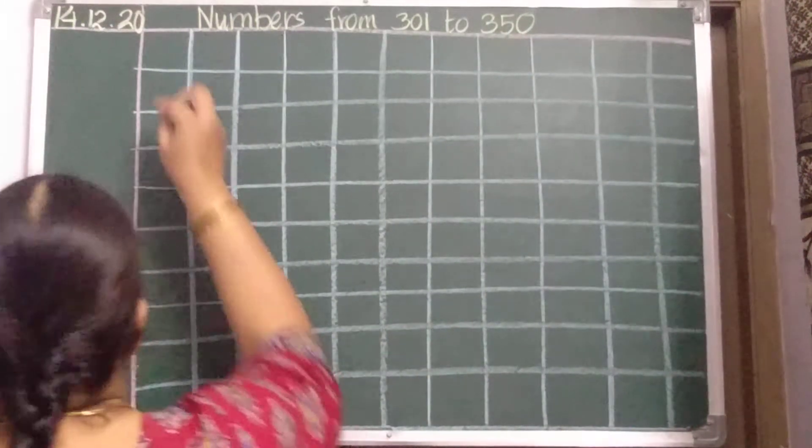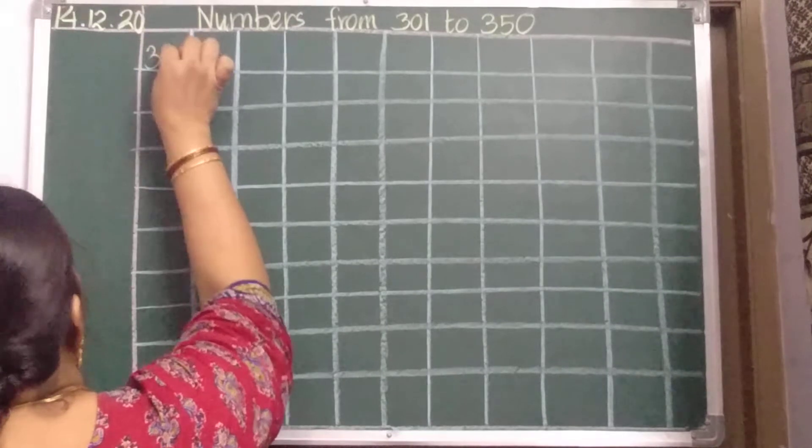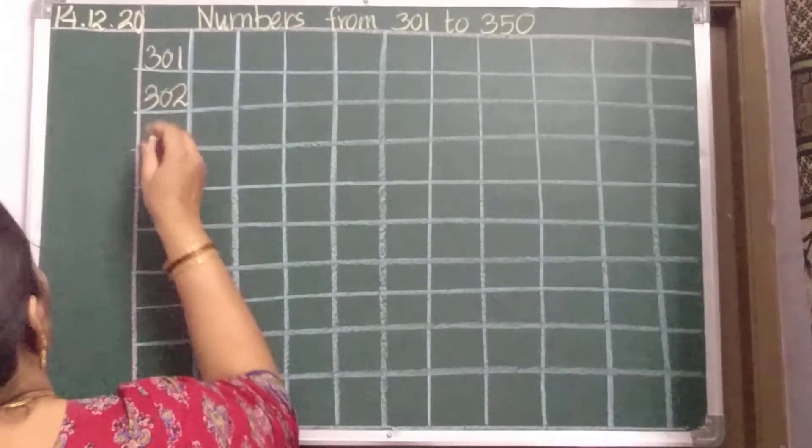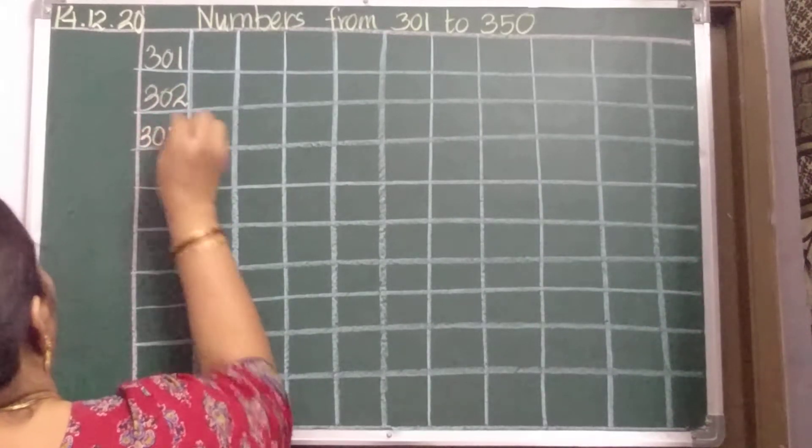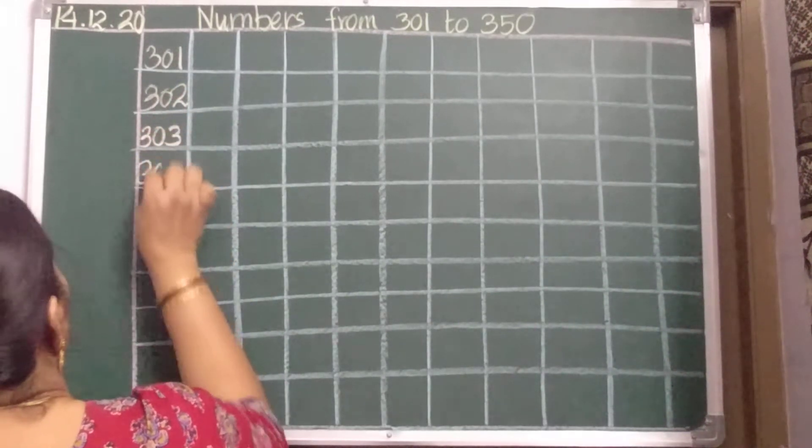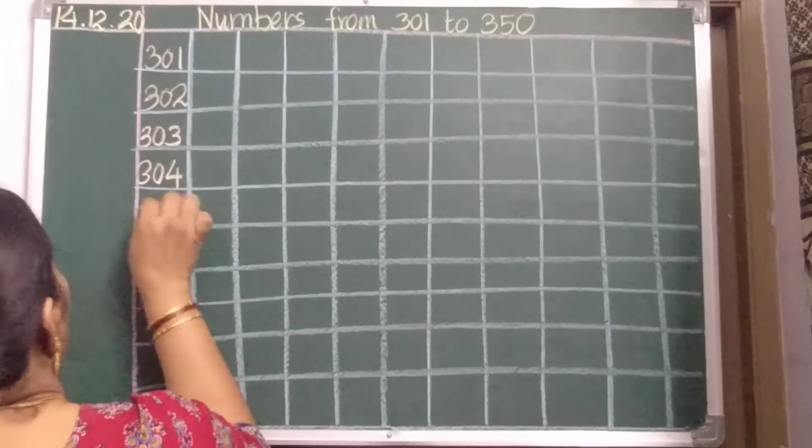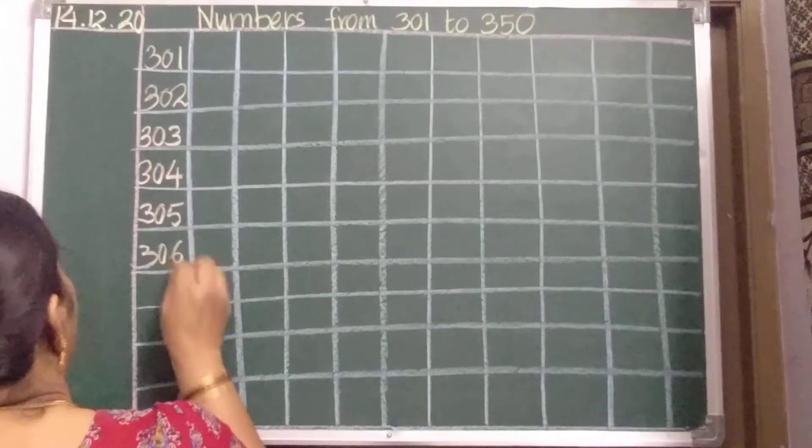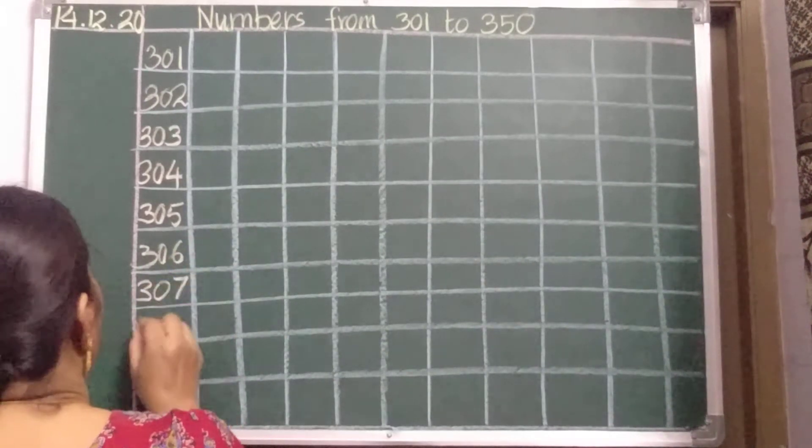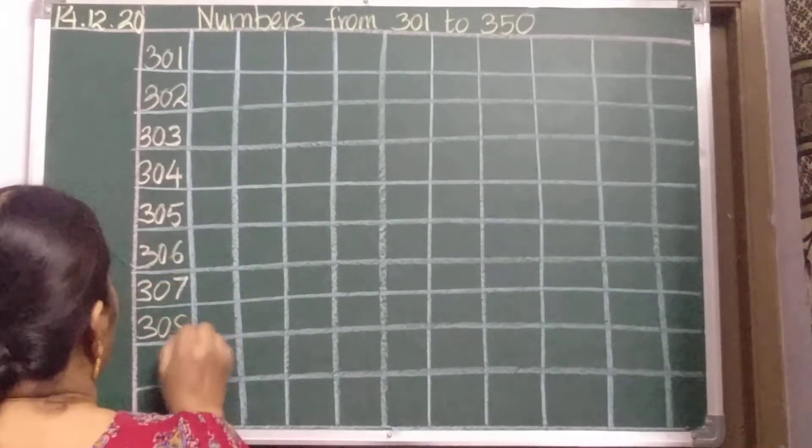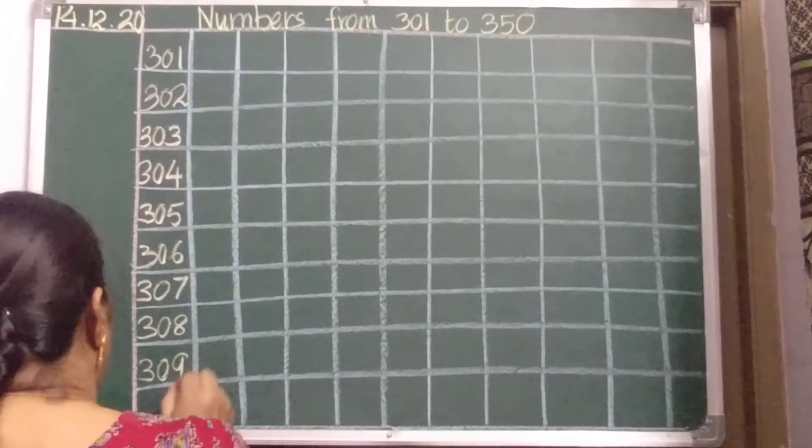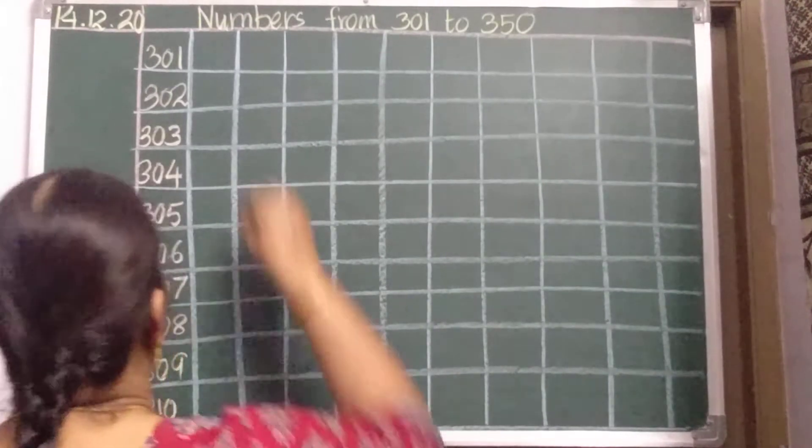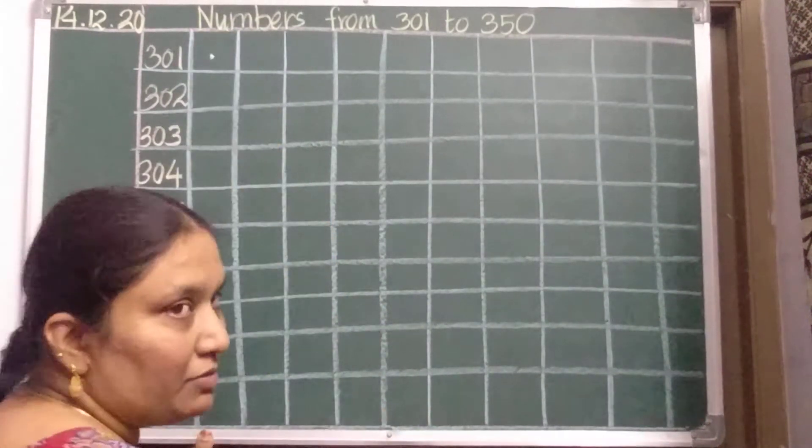So, here 301, 302, 303, 304, 305, 306, 307, 308, 309, and 310. Put a dot, leave one line.